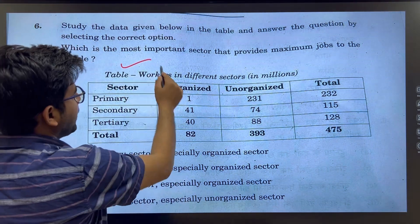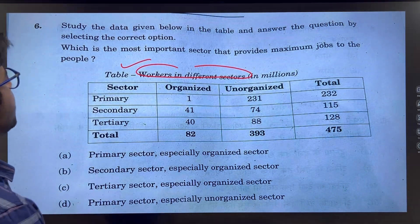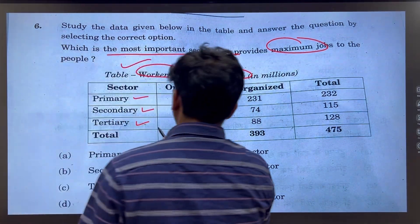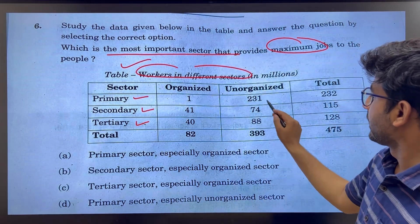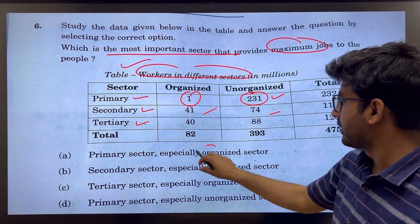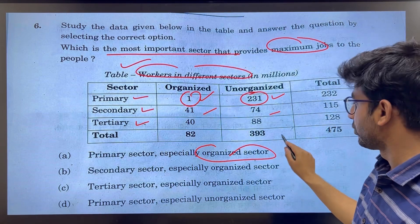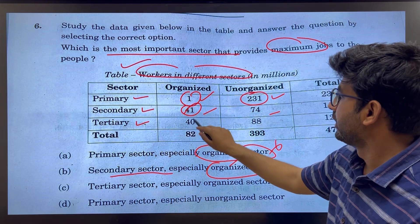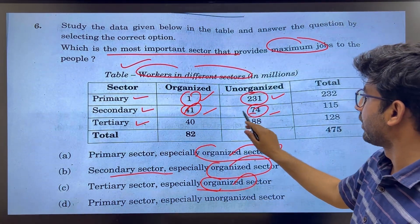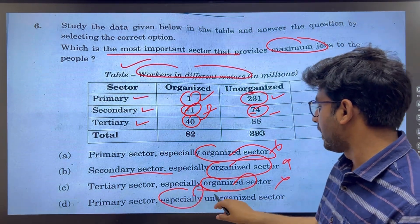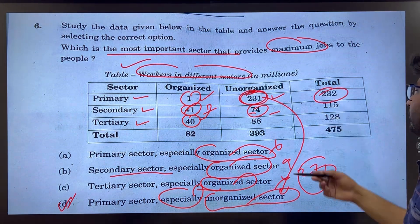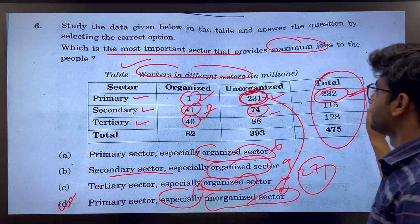The next question has a table of workers showing which sector they work in. The sectors are: primary (agriculture), secondary (manufacturing), and tertiary (service). Looking at the data — 231 unorganized in secondary — primary sector has only one organized worker. The tertiary sector is especially organized with 40-41, which is more than the primary sector's unorganized count. The answer would be D.